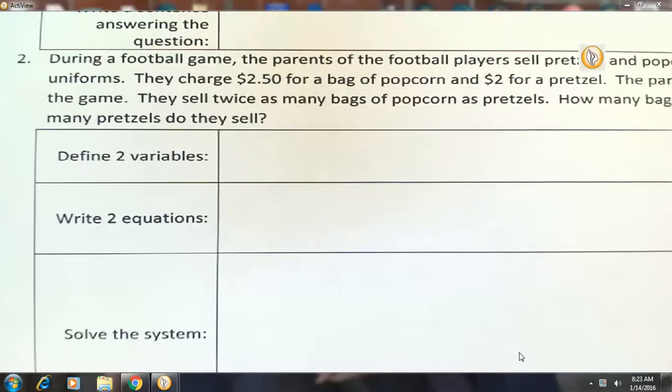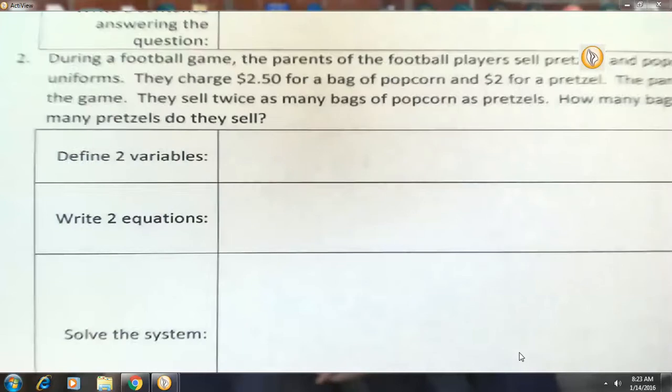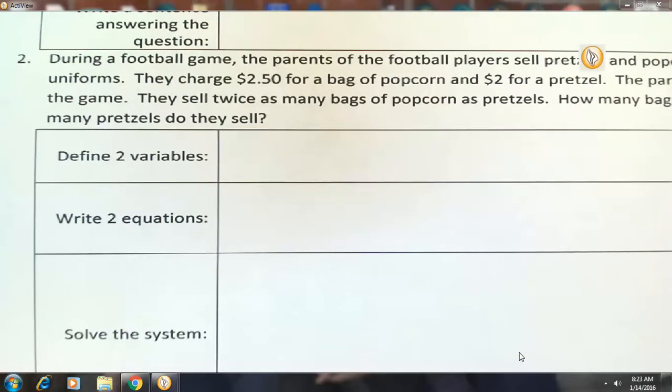So, these parents are trying to raise money. They're selling bags of popcorn for $2.50 and pretzels for $2. The parents have collected $336 in sales during the game. They also tell us they sold twice as many bags of popcorn as pretzels. With that information, we can create a system of equations to figure out how many bags of popcorn they sold and how many pretzels they sold.